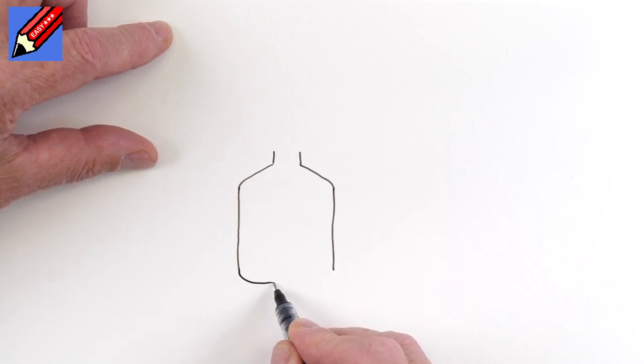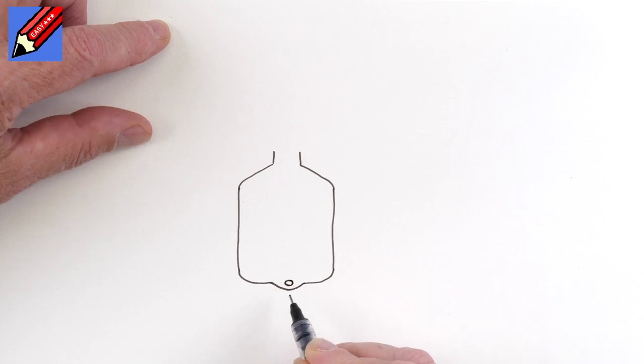And then we're going to come around and around. And then a little bit of a loop at the bottom with a hole to hang it up with.